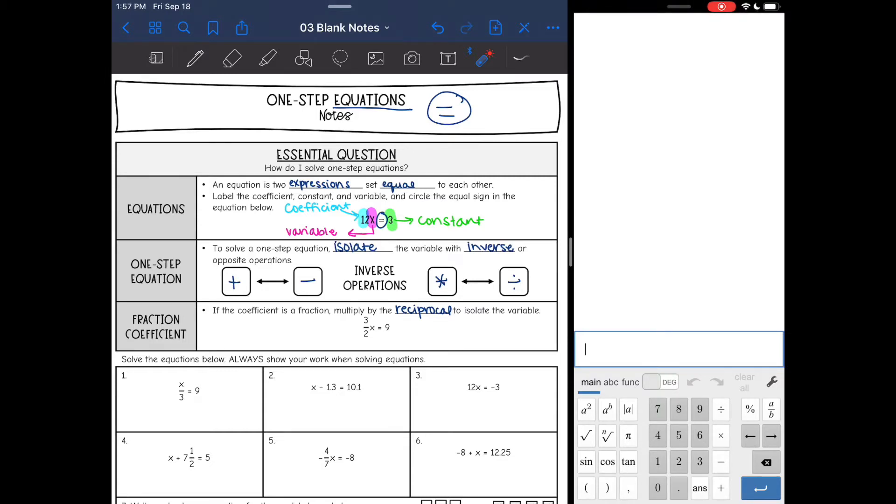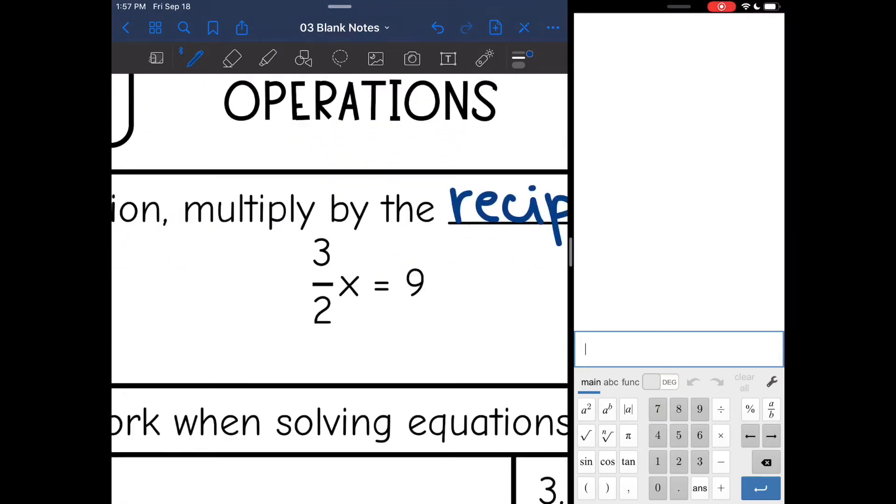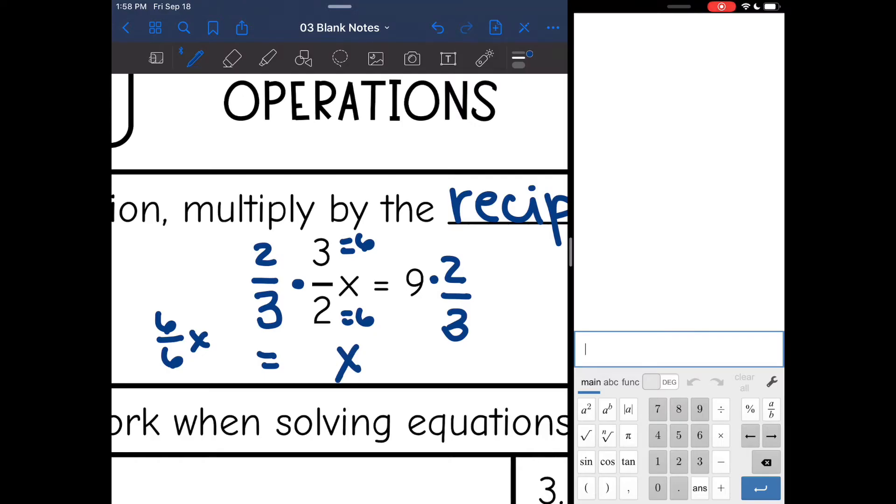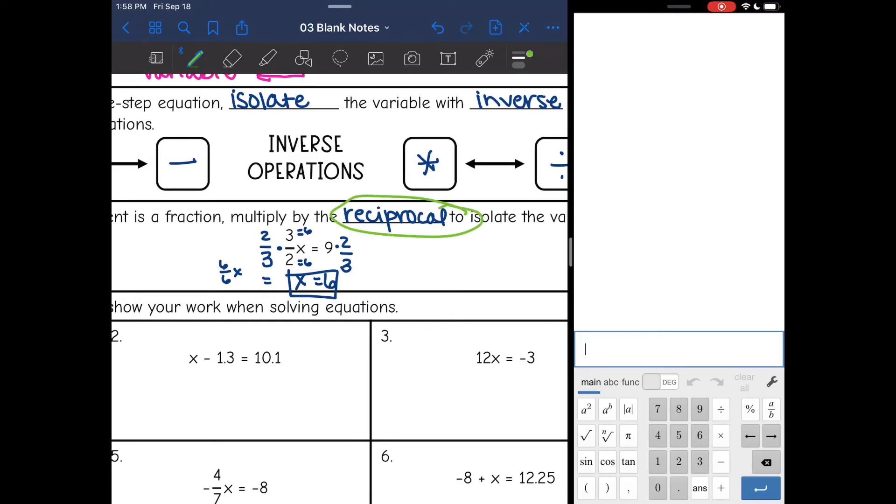One inverse operation that can be tricky to remember is what to do when we have a fraction coefficient. Whenever there is a fraction attached to our variable, you're going to multiply it by the reciprocal to isolate the variable. That's because multiplying by the reciprocal and dividing by the fraction are the same thing. On this one, the reciprocal would be two-thirds. Two times three is six, and three times two is six. So that would be 6/6 x, which is just 1x. Now x is by itself. And nine times two-thirds would be 18 divided by 3, so 6. Main thing, whenever you are solving fraction coefficients, you need to multiply it by the reciprocal.